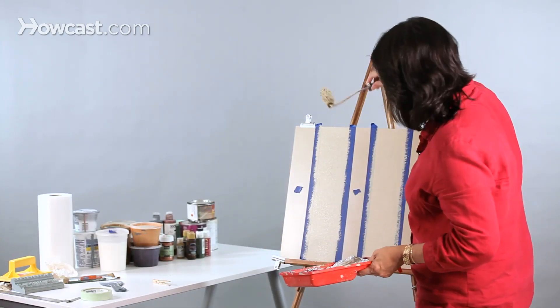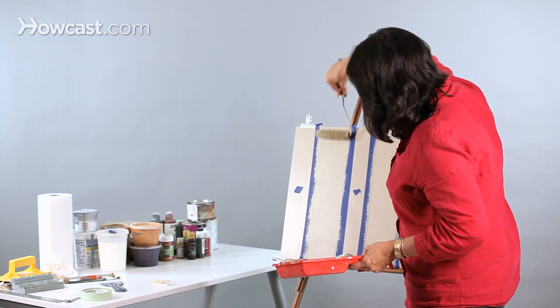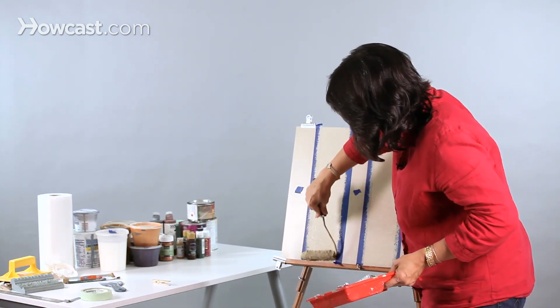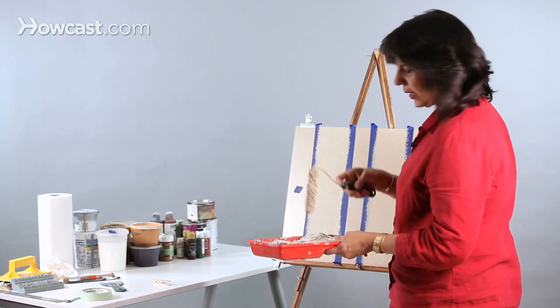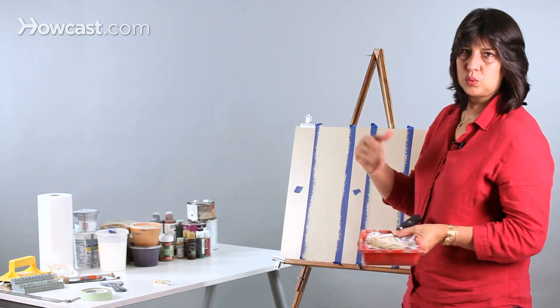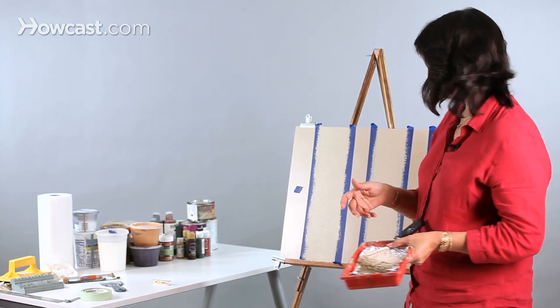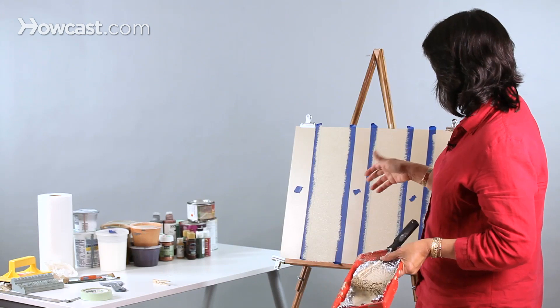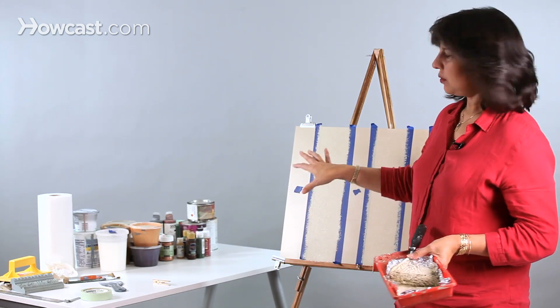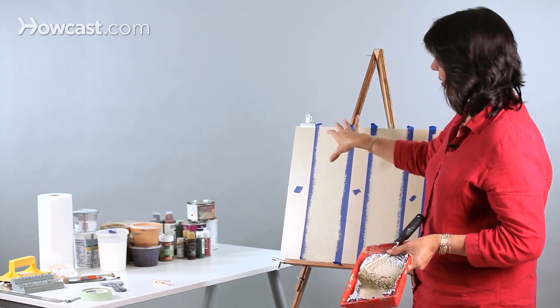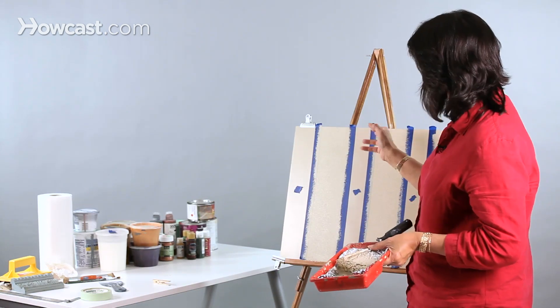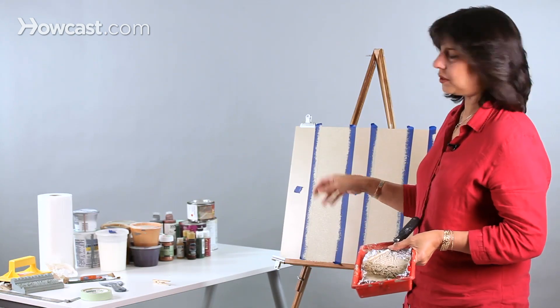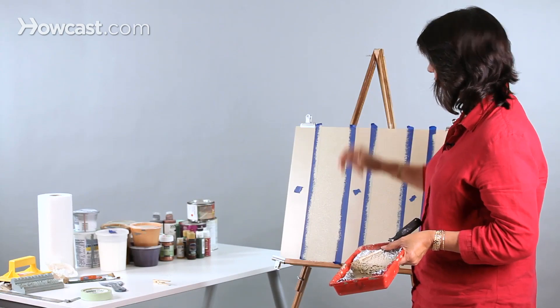Just going over it one more time for good measure. And probably a good idea when you're working on walls in your own home that you actually go over this twice. Allow the first coat to dry and then put a secondary coat on. And then while it's still wet the second coat, remove your tape.